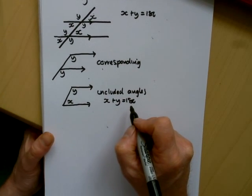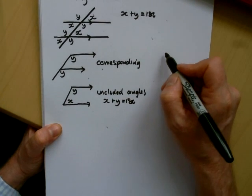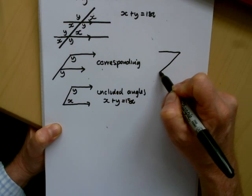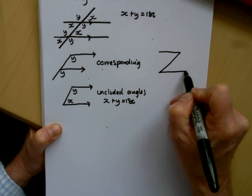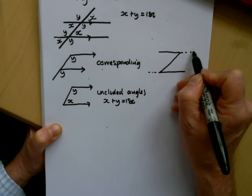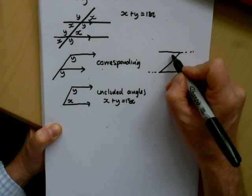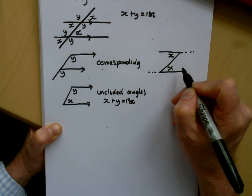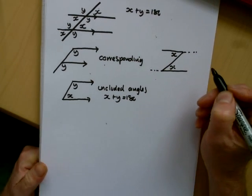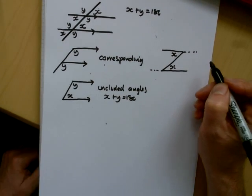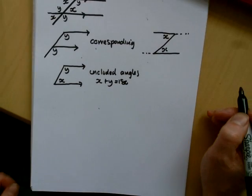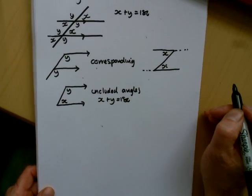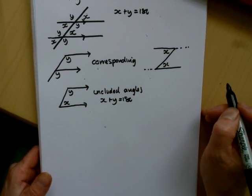And then we get the alternate angles, kind of like a Z-shape. If you draw the line, dot it here and dot it there — the alternate angles are the same. So F, U, and C. This enables us to solve a lot of different types of angle problems.